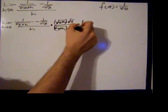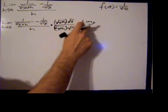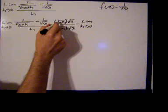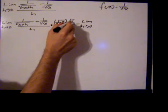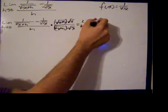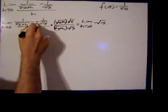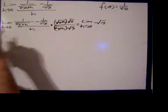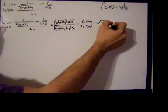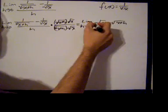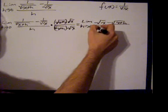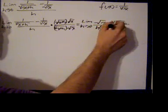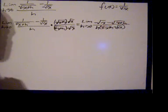When I do so, I get the limit as h goes to 0. Multiplying the square root of x plus h times the square root of x by 1 over the square root of x plus h, I'm left with the square root of x. Then multiplying negative 1 over the square root of x times the square root of x, I'm left with negative square root of x plus h. In the denominator, I have h times the square root of x plus h times the square root of x.